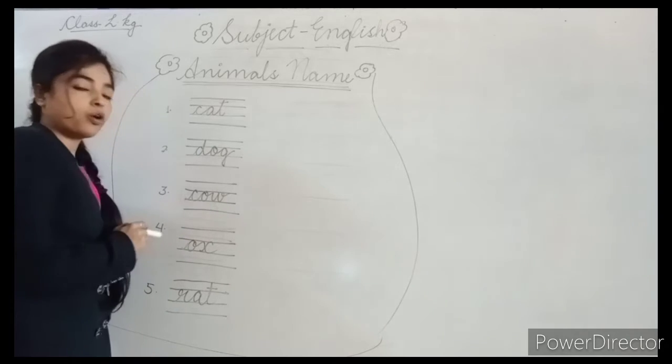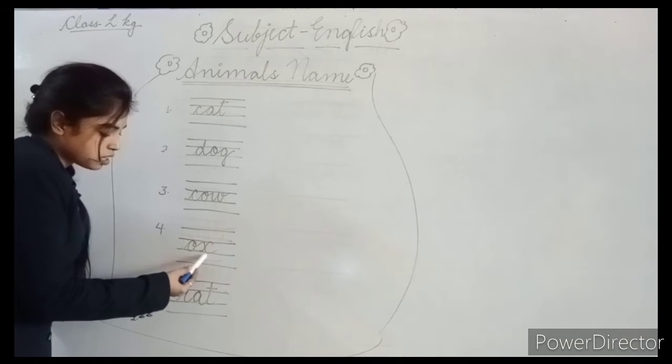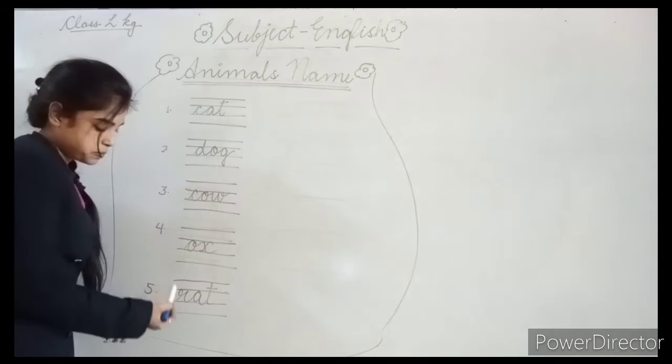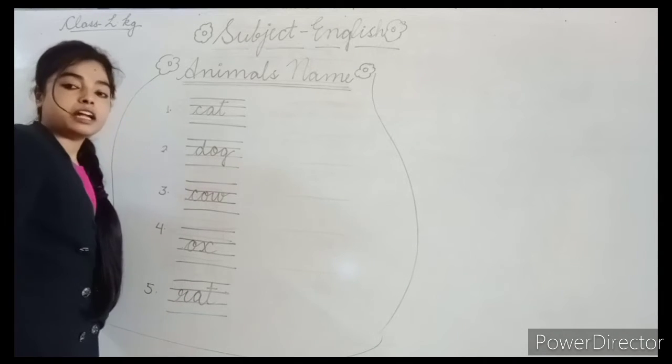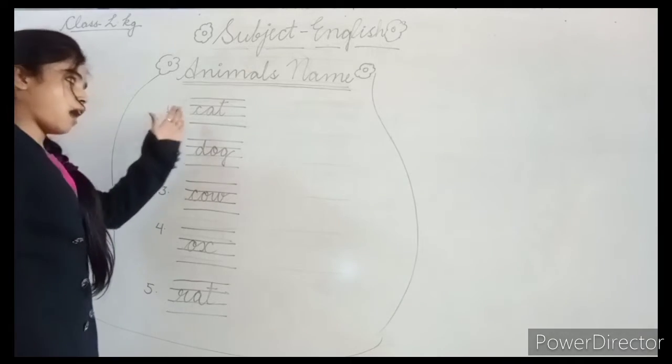C-O-W Cow, cow means Gai. O-X Ox, ox means bail. R-A-T Rat, rat means chooha, okay.